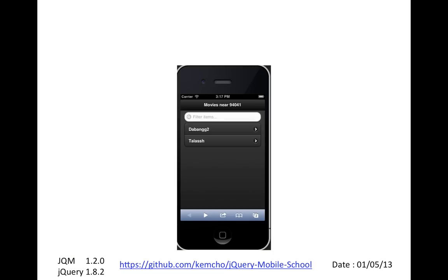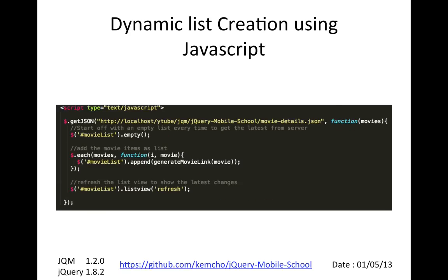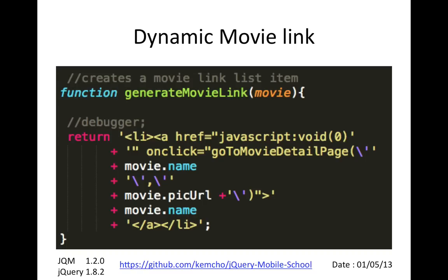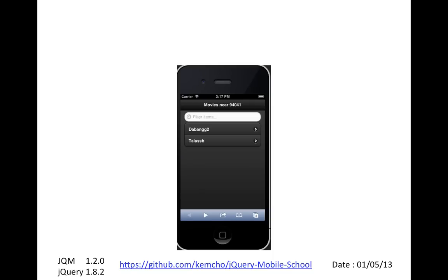The output looks like this. Since we only had two movie objects in our JSON file, we have two items here. Basically what we did was take out all the HTML that we had hand-coded and put it in the generateMovieLink function, which gets called iteratively based on the objects. So we don't have to manually hand-code it — now we have two movies.